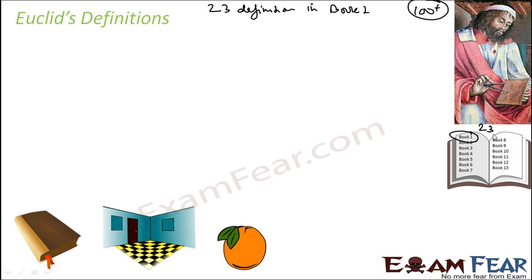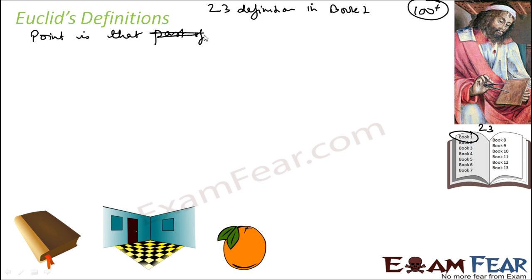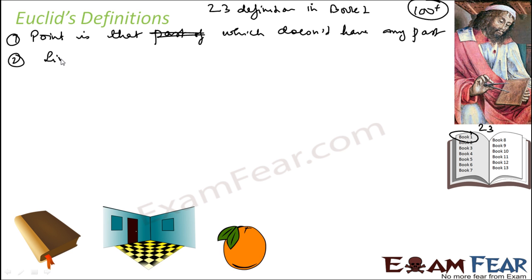For example, he defined a point. A point is that which does not have any part — zero dimension. That is the definition of point.